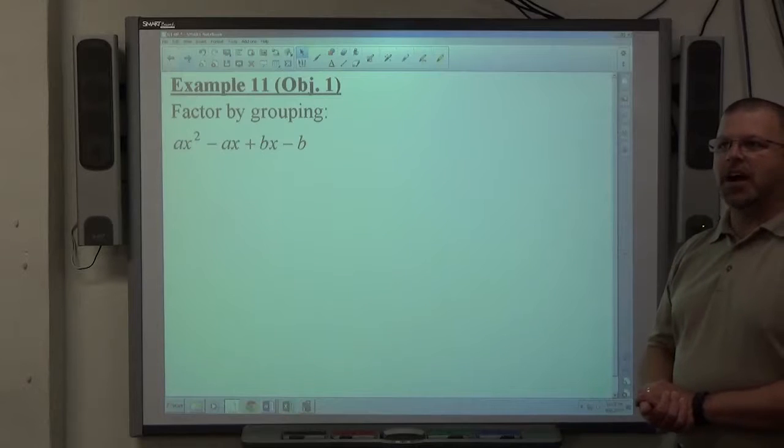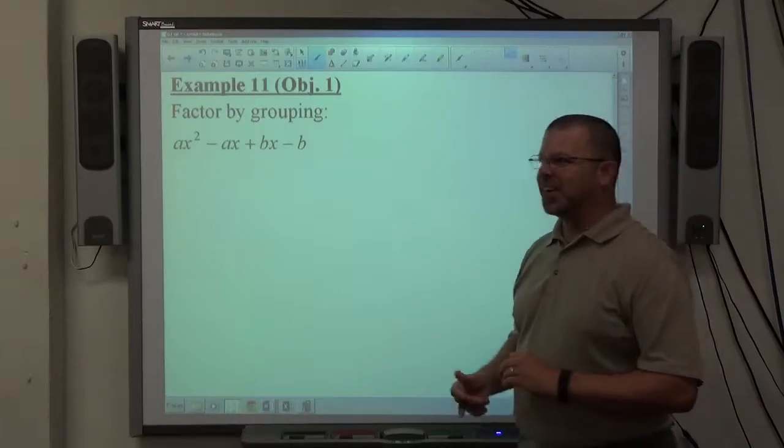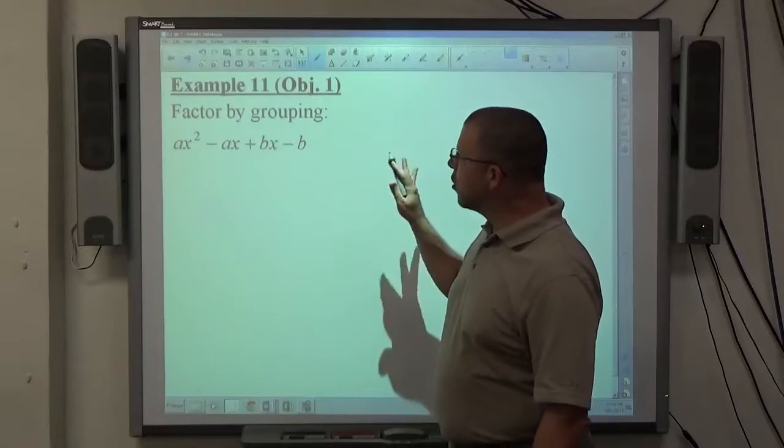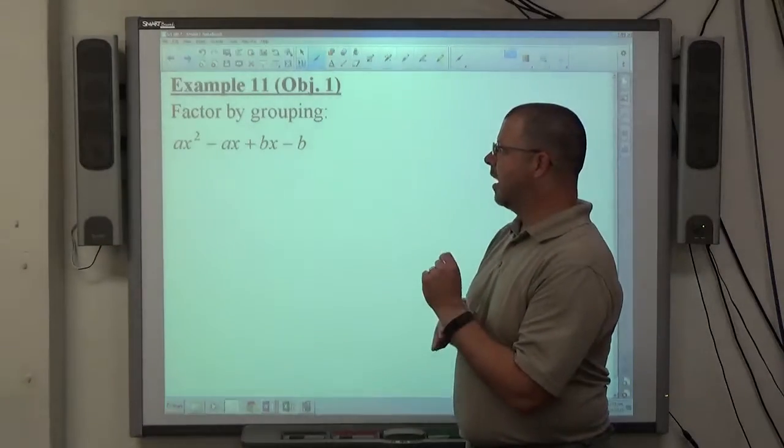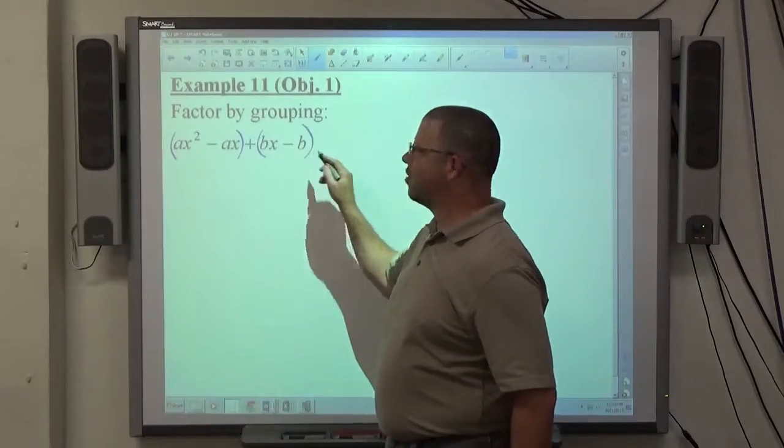This is as basic a factor by grouping problem you can get. The second one's a little more complicated on purpose. But anyway, factor by grouping in general is just you group up things that factor in some way, shape, or form.